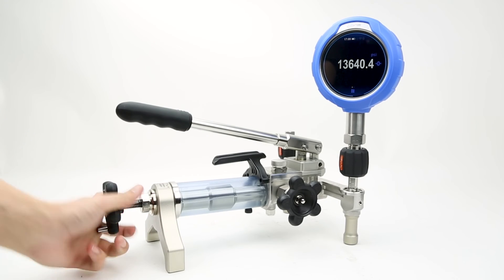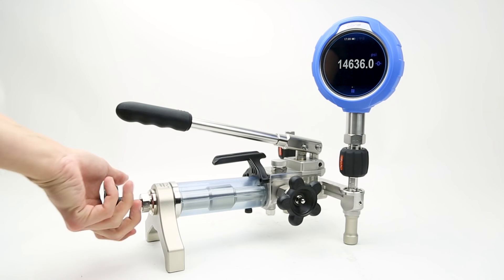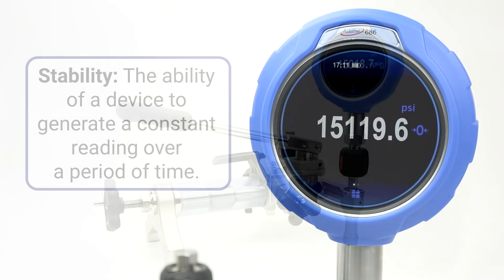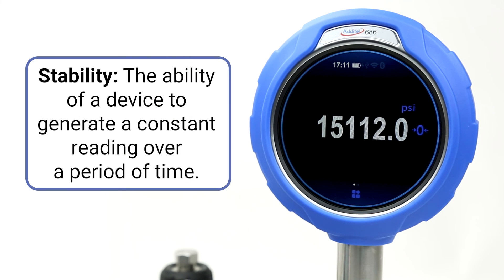When realizing a set point, a technician will often wait for the measured value to stabilize for a moment before taking a reading. The stability of a device is its ability to remain constant over time and will often be characterized as a percentage of the full range of the device.